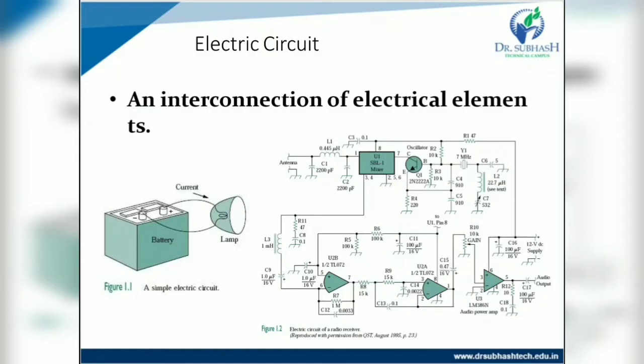What is an electric circuit? An interconnection of electrical elements is called an electric circuit. In figure 1.1 we can see a lamp connected through a conductor to a battery. When power supply is given to the lamp it will turn on. We can put a switch to turn it on and off. Another example is a radio receiver — there are many simple to complex circuits in electrical networks.